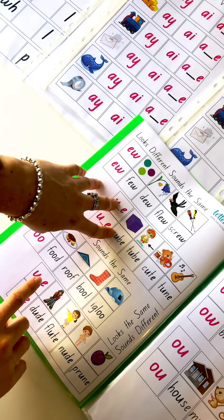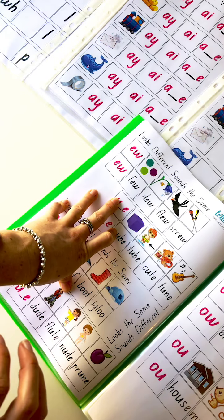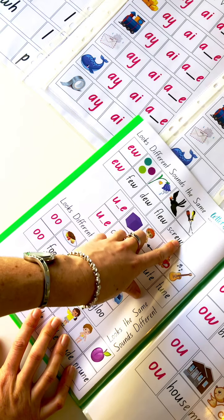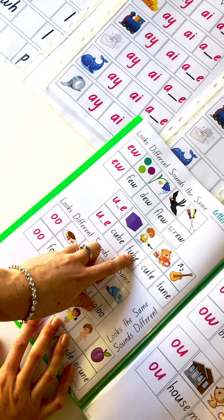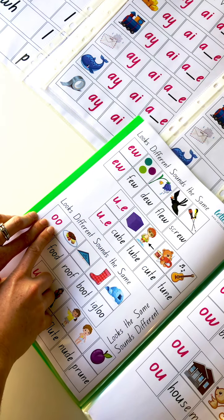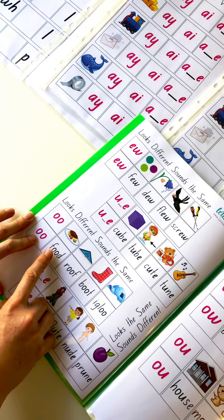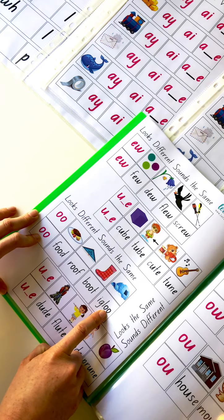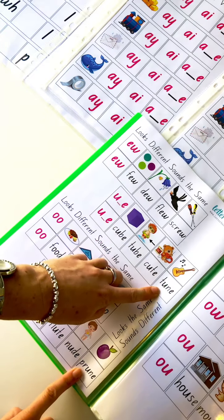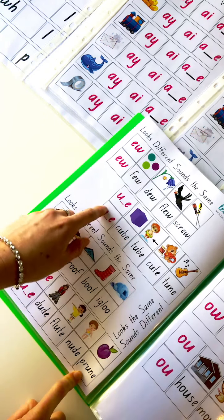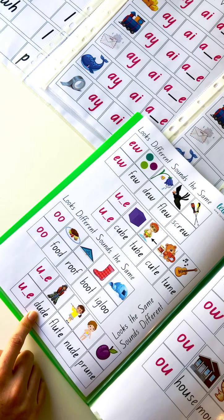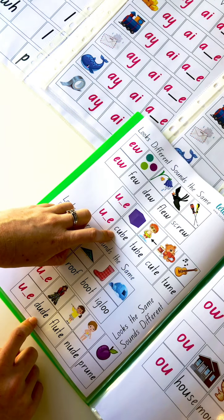So this one, you've got your U. We're sounding the Y before the OO. This one doesn't sound the Y. So we've got few, new, flew, screw, which is the same as this OO. Cube, tube, ute, tune, acute. Then we've got the OO. So there's no Y sound in front. We've got OO for food, roof, boot, igloo, and dude, flute, nude, prune. Now these two are tricky because they look the same. They're not the same. So you may need to go over these a couple of times to start hearing that difference. So dude, cube, and your mouth forms differently for those two. Have a go with them.